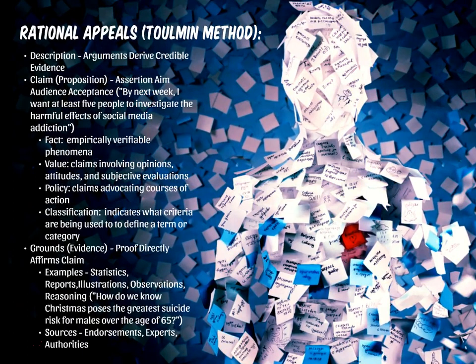Now we're going to talk about the two dominant types of arguments you're going to deploy within your speech. They are rational appeals — sometimes called the Toulmin Method — and emphatic appeals, called the Rogerian Method. You might have already encountered these types of arguments in a composition course. If we were to describe what a rational appeal is, they are arguments that are derived from credible evidence — arguments that your audience can objectively identify and vindicate for themselves. They don't have to adopt any of your premises, or beg any questions, in order to accept your proposition. This all begins with something called a claim.